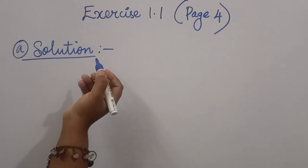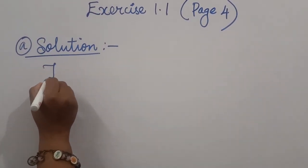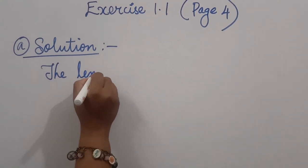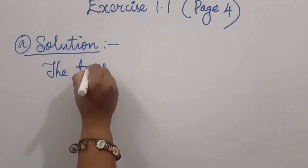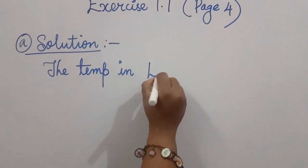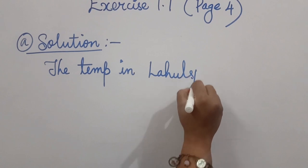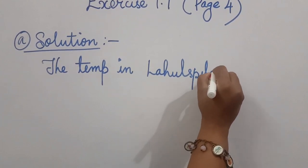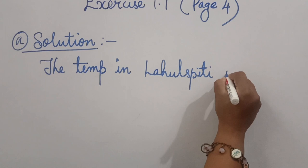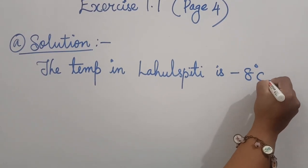You have already read the question, so let's solve it. First one: what is the temperature in Laul Spiti? Look at the number line and let me know. It is minus 8 degrees Celsius.